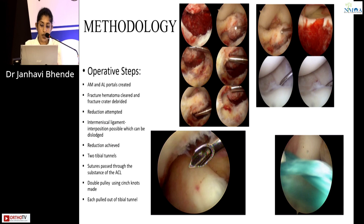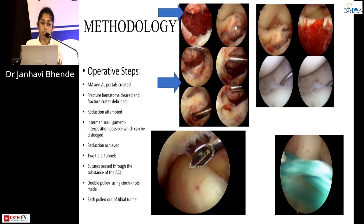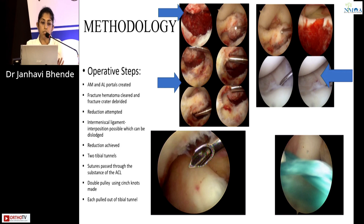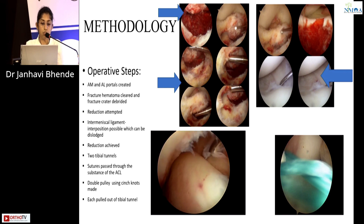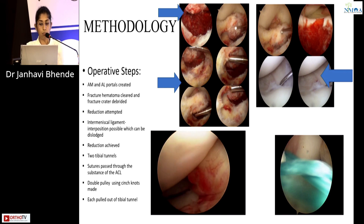Operative steps: anteromedial and anterolateral portals are created. Fracture hematoma is cleared and the fracture crater is debrided. Reduction is attempted. There are times when the intermeniscal ligament may interpose between the fracture fragments, as can be seen in the picture. In these cases, the interposition has to be dislodged and then fracture reduction is achieved. Two tibial tunnels are created on either side of the ACL using a tibial jig. Sutures are passed through the substance of the ACL as demonstrated in the video.